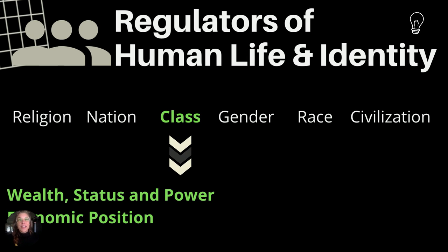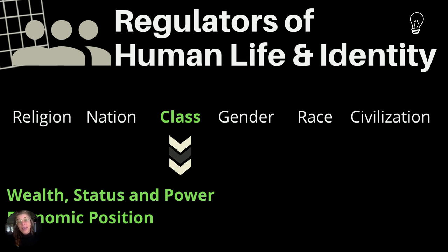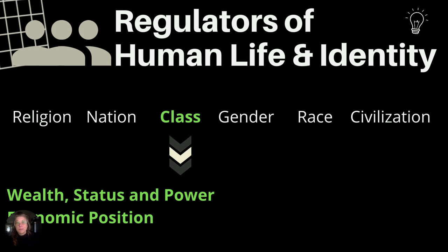Next up, the third regulator is class, or as Max Weber defined it, social class, which is determined by wealth, status, and of course power. Class is your economic position in a specific society, such as upper, lower, or middle class, or the Hindu caste system in India.